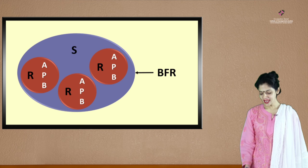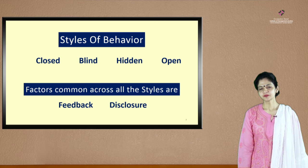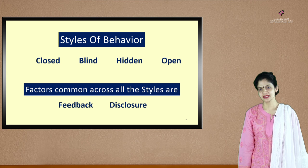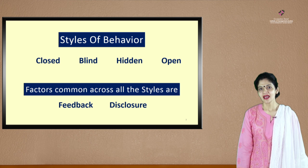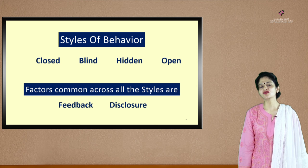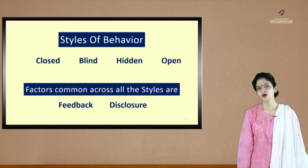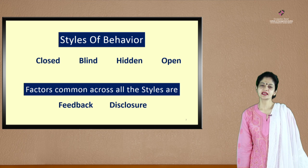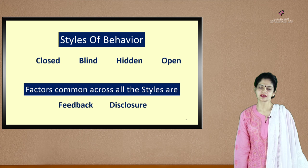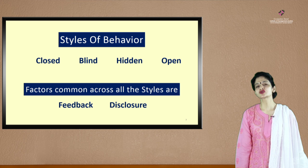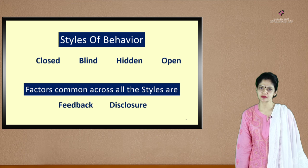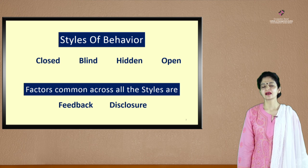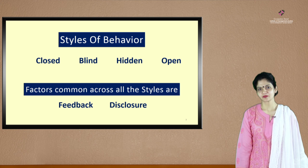Depending upon all this, we have the four styles of behavior — in business communication, we call it the four styles of managerial behaviors. These are the closed style, the blind style, the hidden and the open style. There are two aspects which are common across all these four styles: feedback and disclosures. Feedback was something which the receiver transmitted back as a response to what the sender asked him.